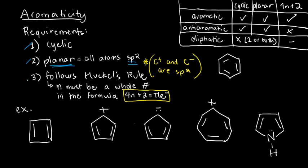And three, this is something that requires some kind of computation. This must follow the Huckel's rule. The Huckel's rule states that if I use the formula 4n plus 2 equals pi electrons, if I algebraically solve for the n, n must be a whole number, which includes 0, 1, 2, 3, and so on.